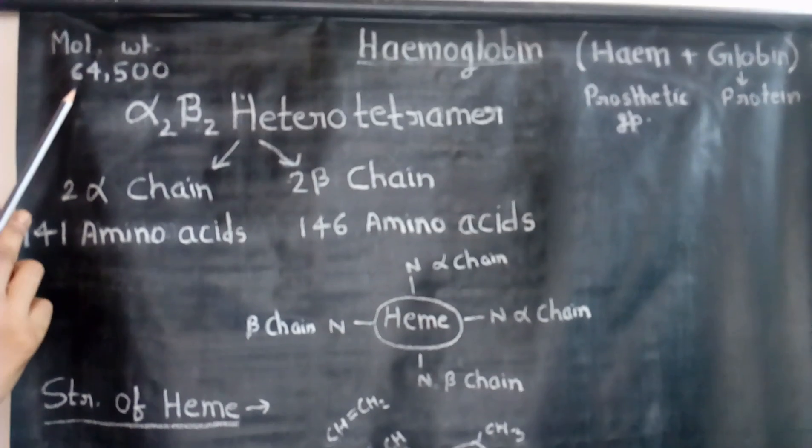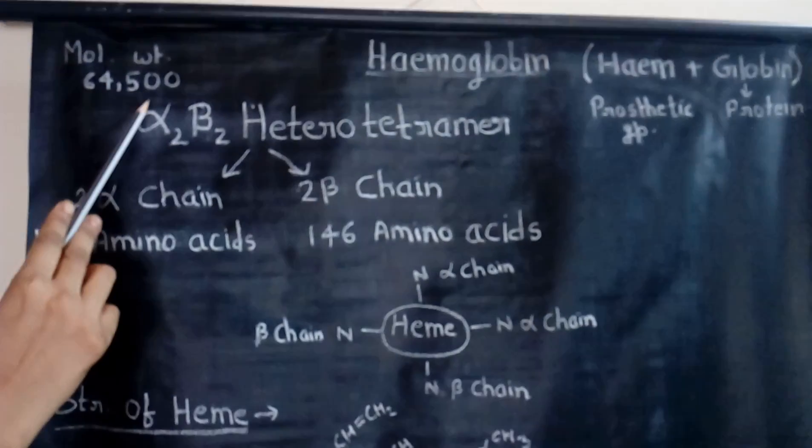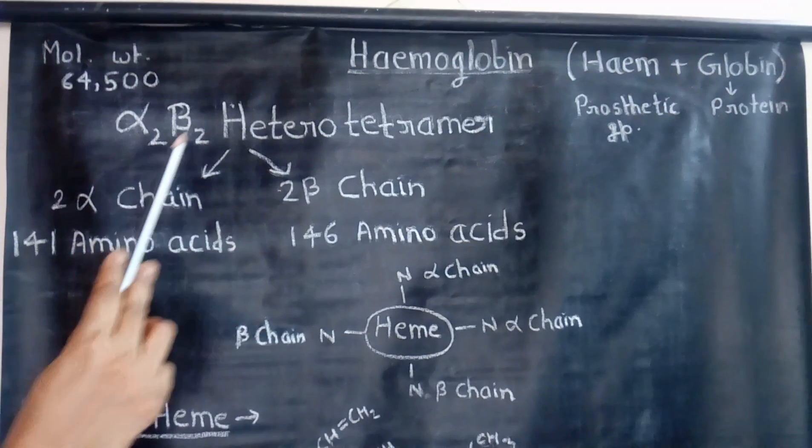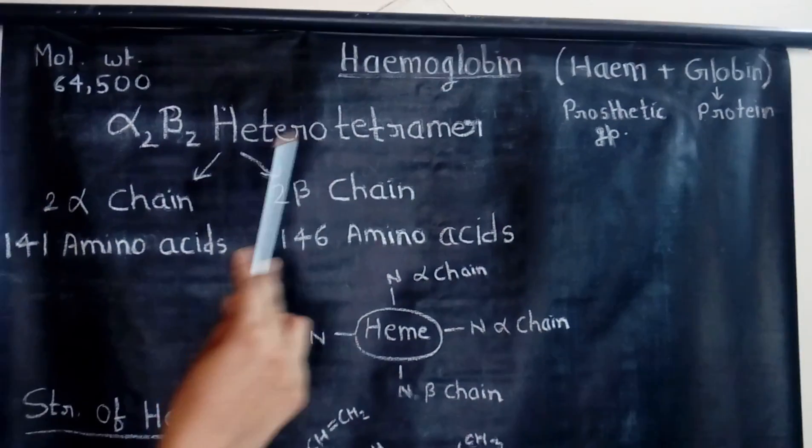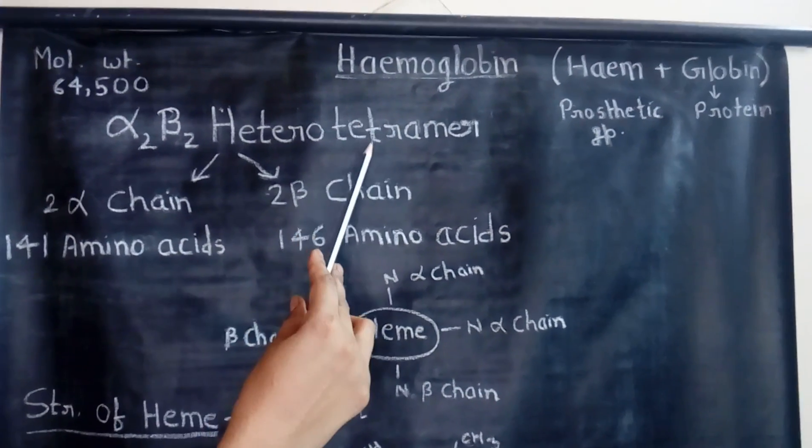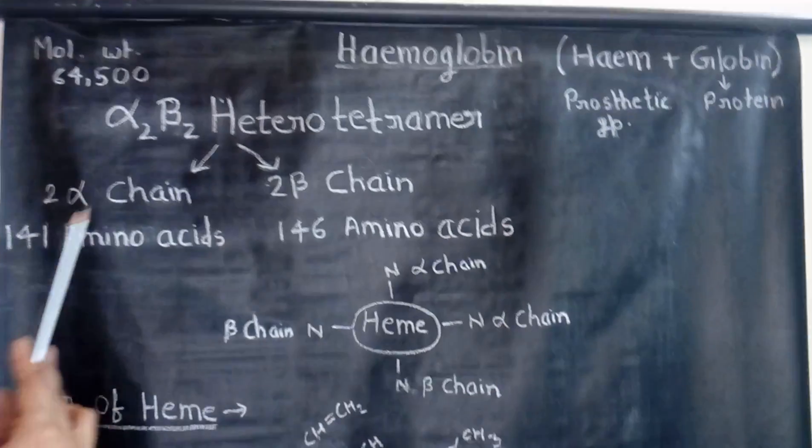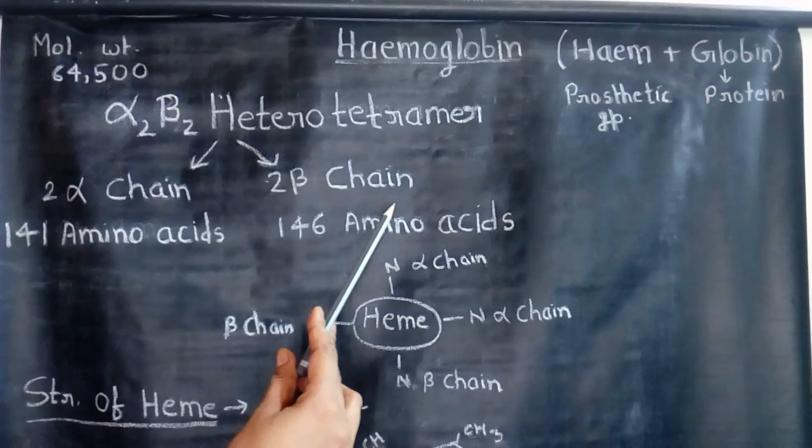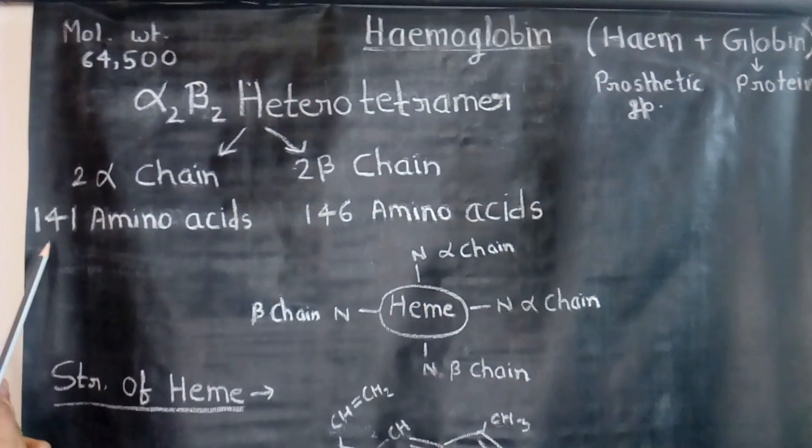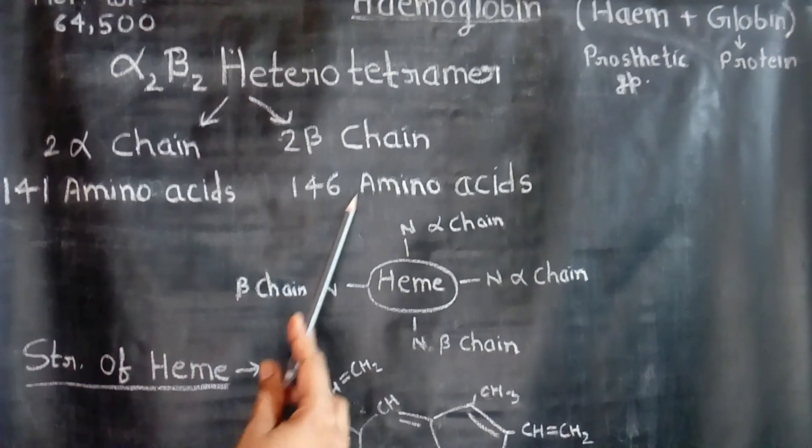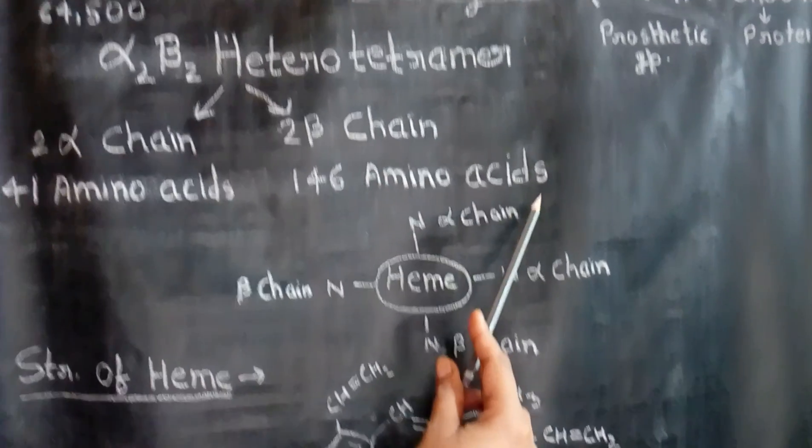The molecular weight of hemoglobin is 64,500. Actually hemoglobin is an alpha-2 beta-2 heterotetramer. Heterotetramer means it contains 4 units and the 4 units are different: 2 alpha chains and 2 beta chains. The alpha chains contain 141 amino acids and beta chains contain 146 amino acids.